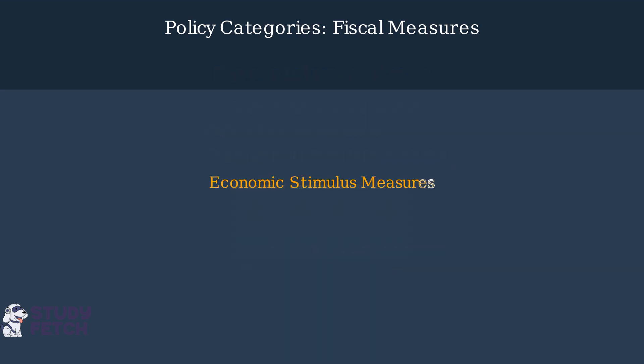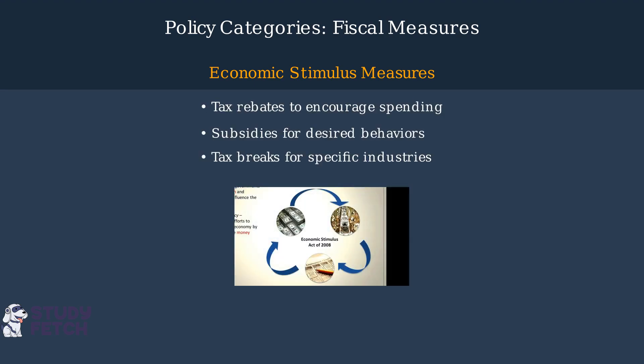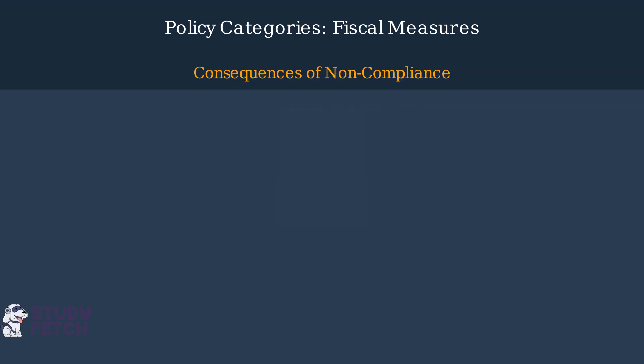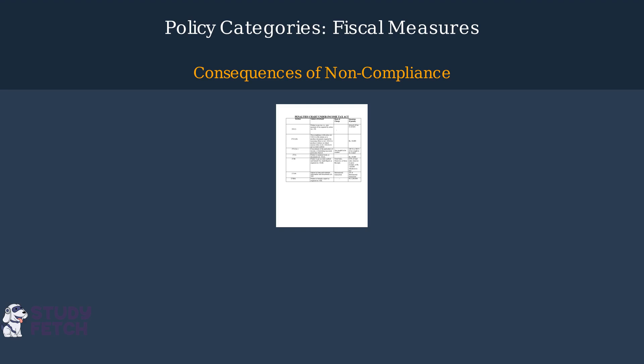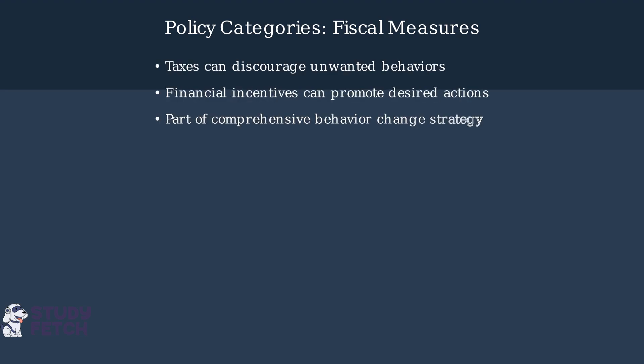On the flip side, governments can provide economic incentives to promote desired behaviors. These include tax rebates to encourage spending, subsidies for behaviors like renewable energy adoption, and tax breaks for specific industries. For fiscal measures to be effective, there must be consequences for non-compliance. Tax systems include penalties and enforcement mechanisms that help ensure the desired behavioral changes are achieved. In summary, fiscal measures represent a powerful tool in behavior change strategies, allowing policymakers to influence behaviors at a population level.